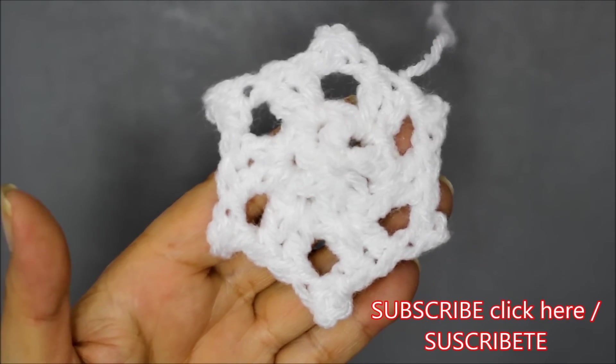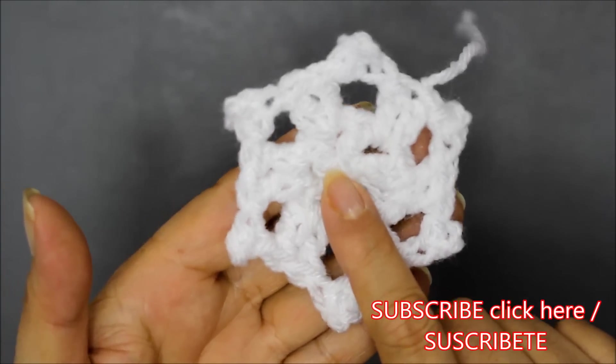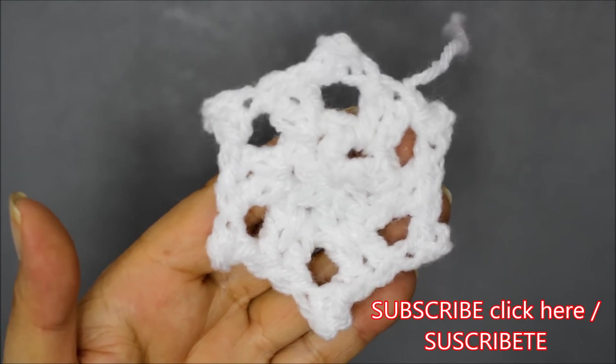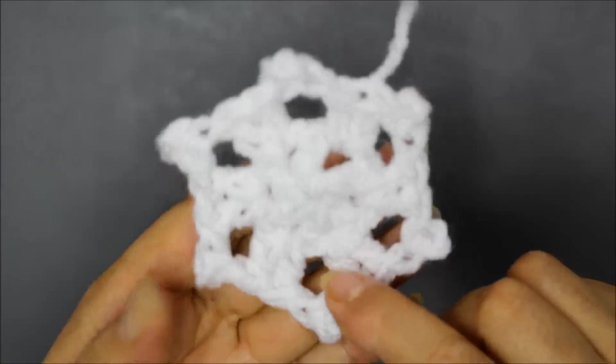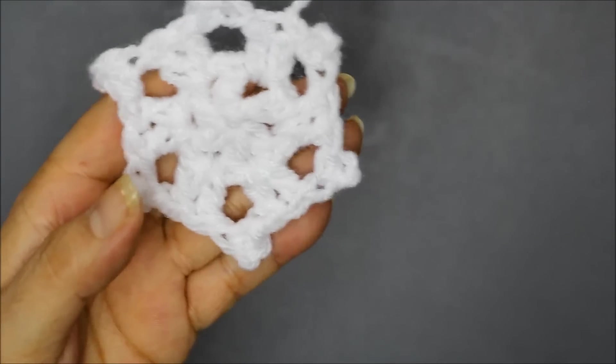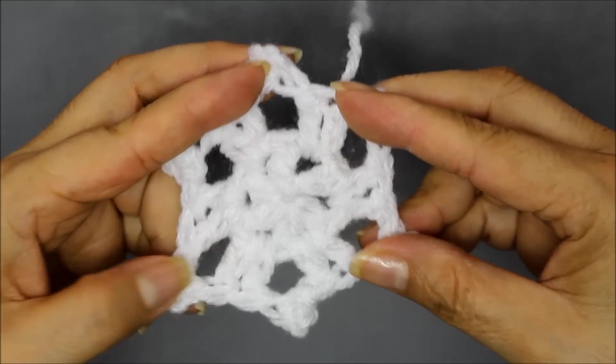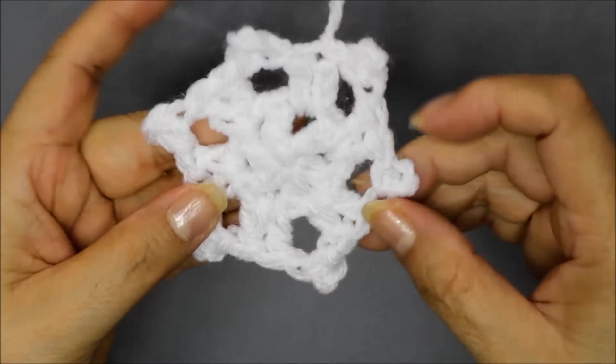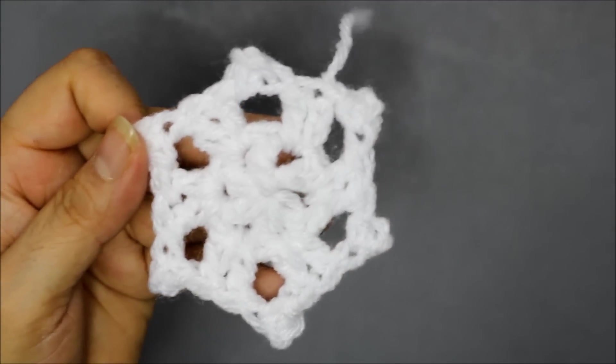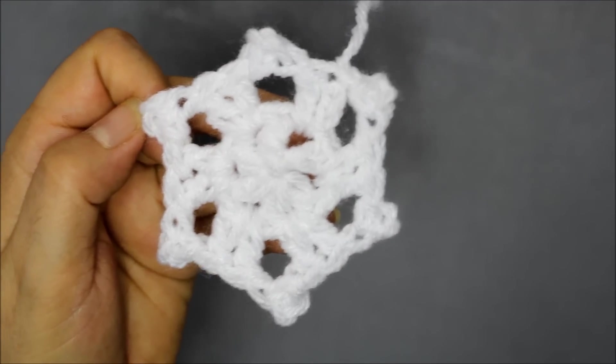This is Yolanda from the OutCross channel and in today's tutorial I'm going to show you how to make these little mini snowflakes. They're really fast and easy to do. This is not blocked yet but when you block it then it would give it a little bit more shape. Be sure to subscribe, hit the like button and let's get the party started.